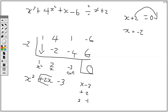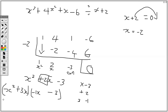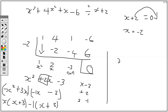Once we have the factors we're going to replace the center term with 3 and negative 1, so we're going to have x squared plus 3x minus x minus 3. Then we group: in the first bracket we factor out x and we're left with x plus 3; in the next bracket we factor out negative 1 and we're left with x plus 3. So we have x minus 1, times x plus 3, and the one we used to divide is x plus 2. That is how we factorize a polynomial.